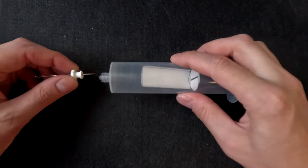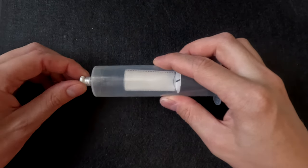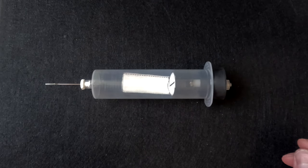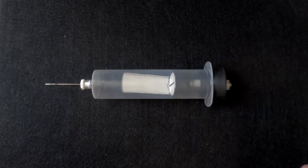The needle assembly is then placed in the tip of the syringe. This completes the assembly of the crooks tube.